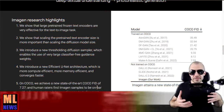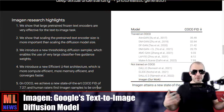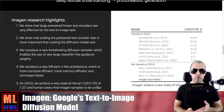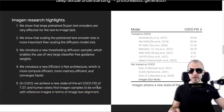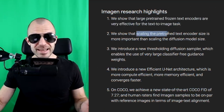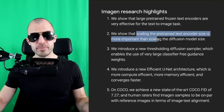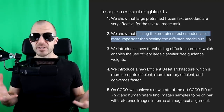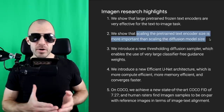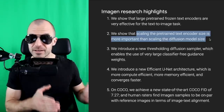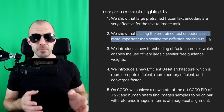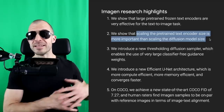Super-resolution models can be trained in a very unsupervised way — you simply take a large image, downsample it, and train the model to go in reverse. The Imagen paper points out that large pre-trained frozen text encoders are very effective, and that scaling the pre-trained text encoder size is more important than scaling the diffusion model size. The quality and adherence to the prompt is thanks in large part to scaling up the text part of the model.